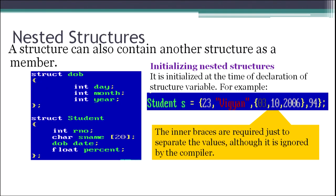To initialize a nested structure, we write: student s = { roll_number, name, { day, month, year }, percentage }. The inner braces are used to separate the values for the nested structure. Although the inner braces are ignored by the compiler, they help readability, making it clear that this is a nested structure.